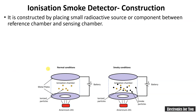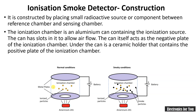Now let's see the construction of the ionization smoke detector. There is an aluminum plate, and a radioactive material is placed between two ionizing plates. This is known as the ionization chamber, which is also called the sensing chamber. An aluminum can contains the ionization source.